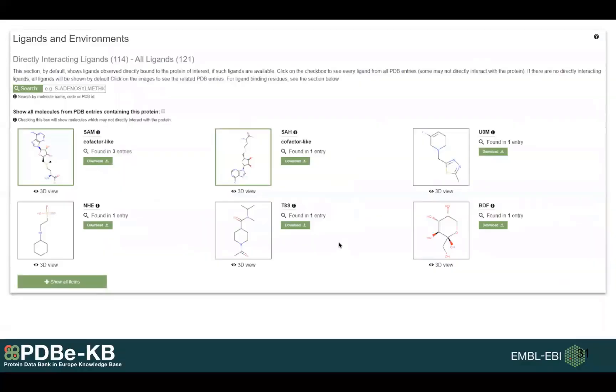We have a specific section for small molecules. On one hand, there is a gallery where you can download all those PDB entries where you have one particular small molecule present. On the other hand, we are also showing annotations if we have any. For example, if we know that this is a cofactor-like molecule, we are placing it there.